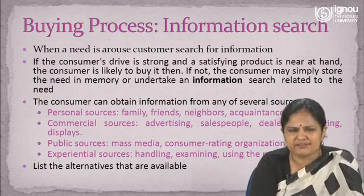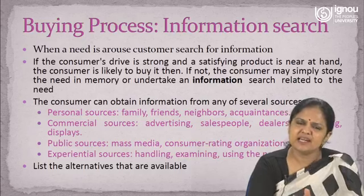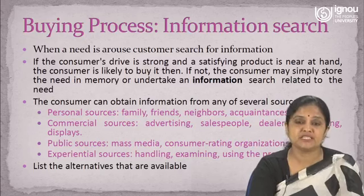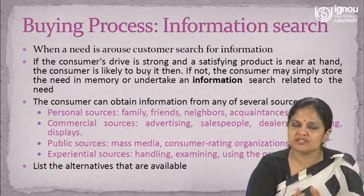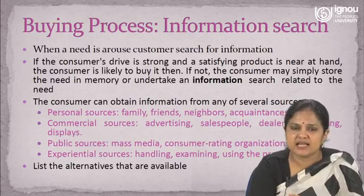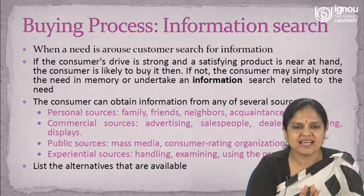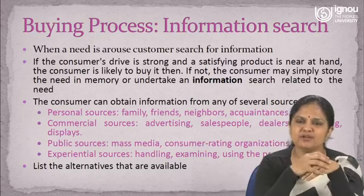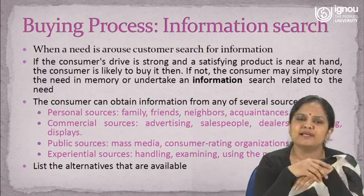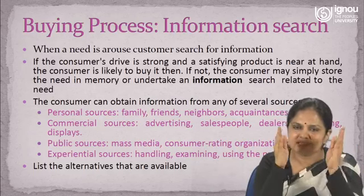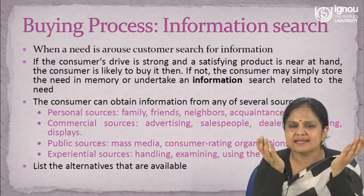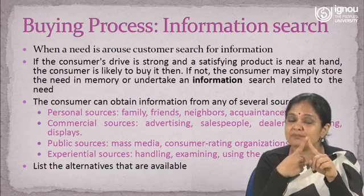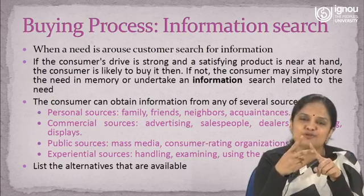Personal sources may be family, friends, neighbors and acquaintances. Commercial sources include advertising, sales people, dealers, packaging and displays. Public sources include mass media and consumer rating organizations. Experiential sources involve handling, examining or using the product — you touch or see a product and are attracted toward it. In this step you are collecting information to help you decide whether to go for a particular offering and, if yes, how to go about it.